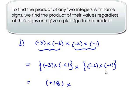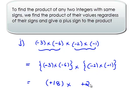To find the product of negative 2 and negative 1, first we multiply their values. When we multiply two similar signs, we always get a positive sign — that is plus 2.